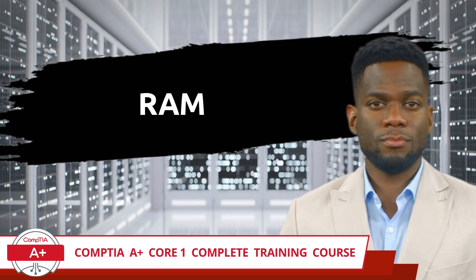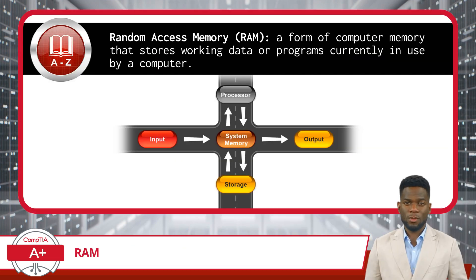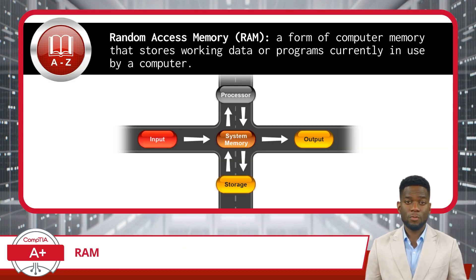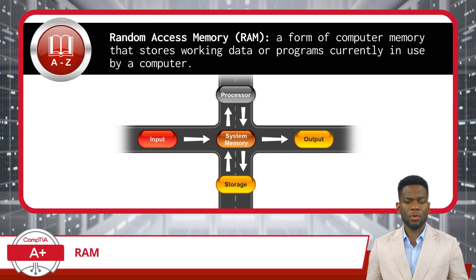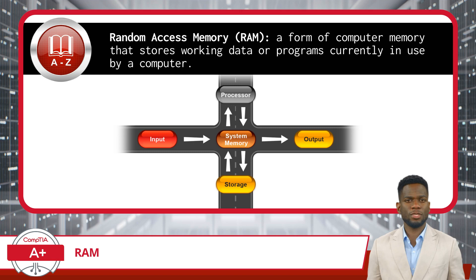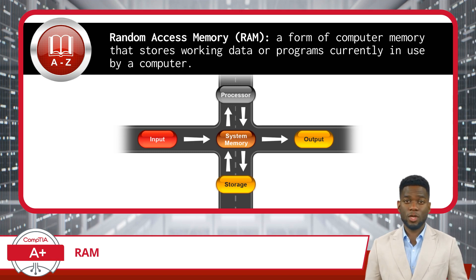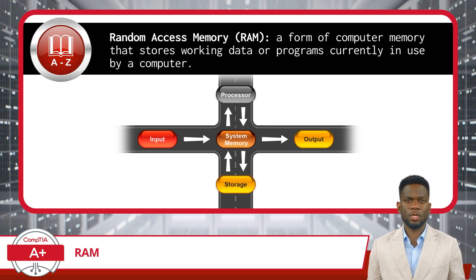RAM, or Random Access Memory, is a form of computer memory that stores working data or programs currently in use by a computer. RAM is also the type of memory used for the system memory of most computing devices.